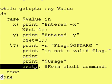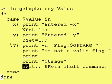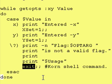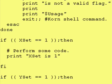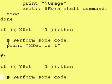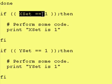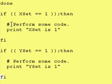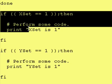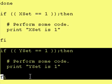Then we exit from the script, which stops execution at that point and won't go any further. The exit command is actually a Corn Shell command. After we're done processing all of our flags, we go down past the done statement. There we have code that says if xset is 1, print x set as 1; if yset is 1, print y set as 1. In an actual program we'd do something useful here, but this is how you translate a dash x or dash y into actual code.